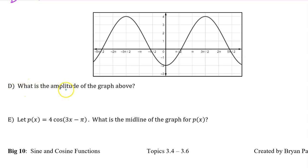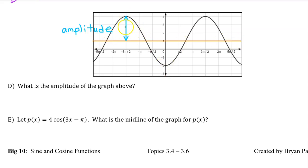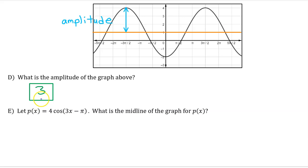Part D. What is the amplitude of the graph above? First we draw the midline halfway between the max and min. The amplitude is the difference between the max and the midline — in this case 3. So the amplitude is 3.